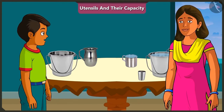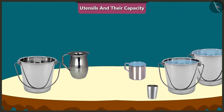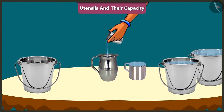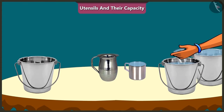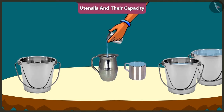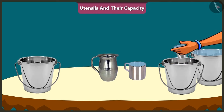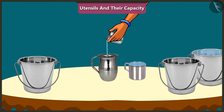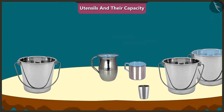Now, with the help of the same glass, we will fill this jug with water. One, two, three, four, five, and six. The jug is completely filled. So the capacity of this jug is equal to six glasses of water.